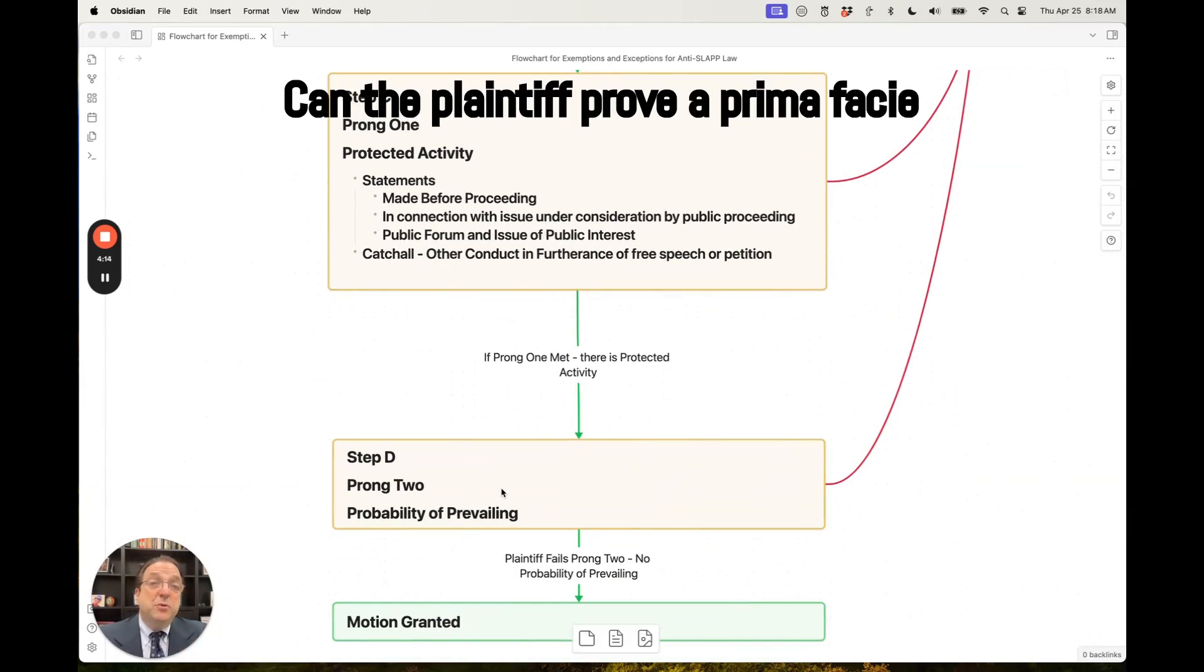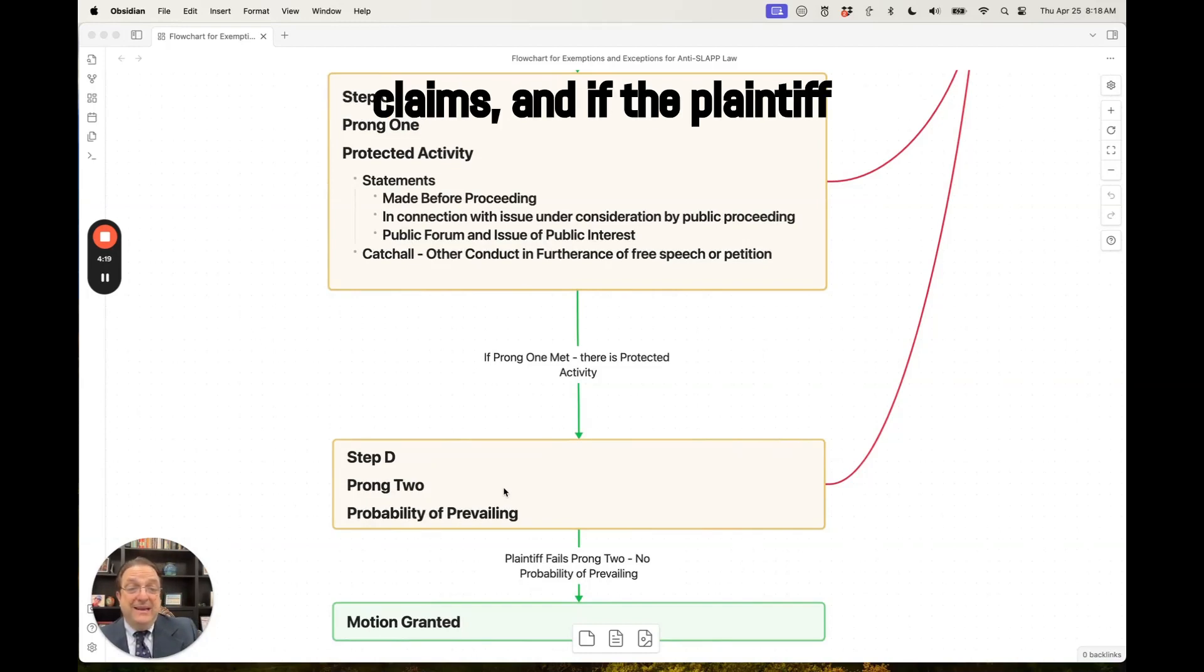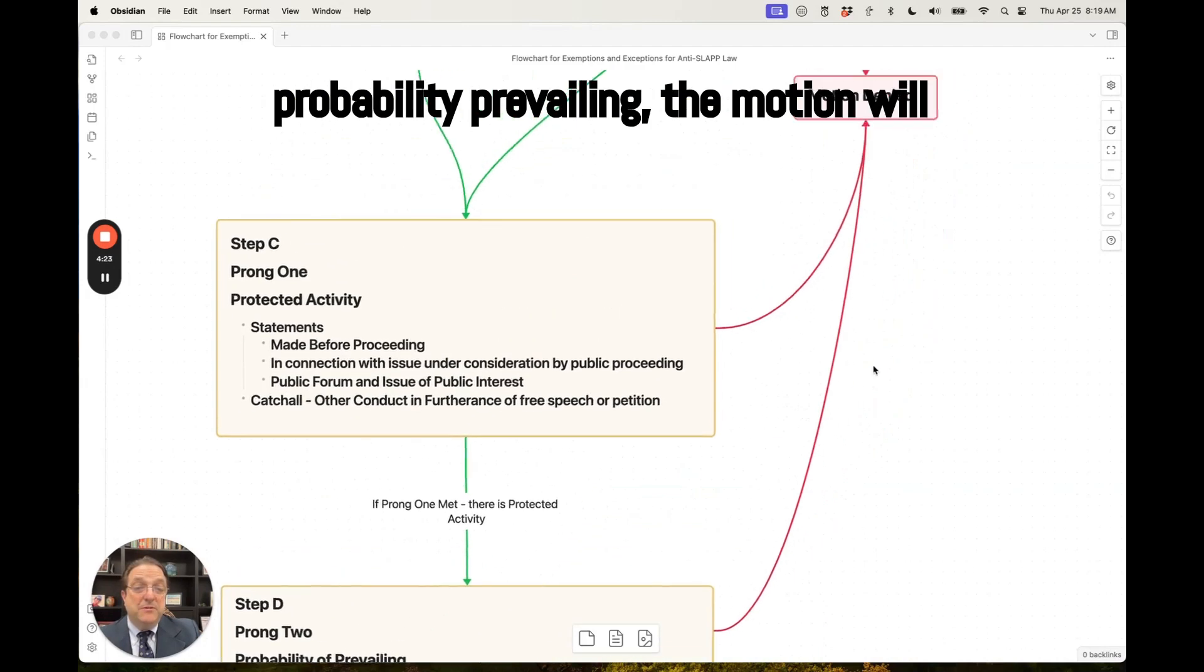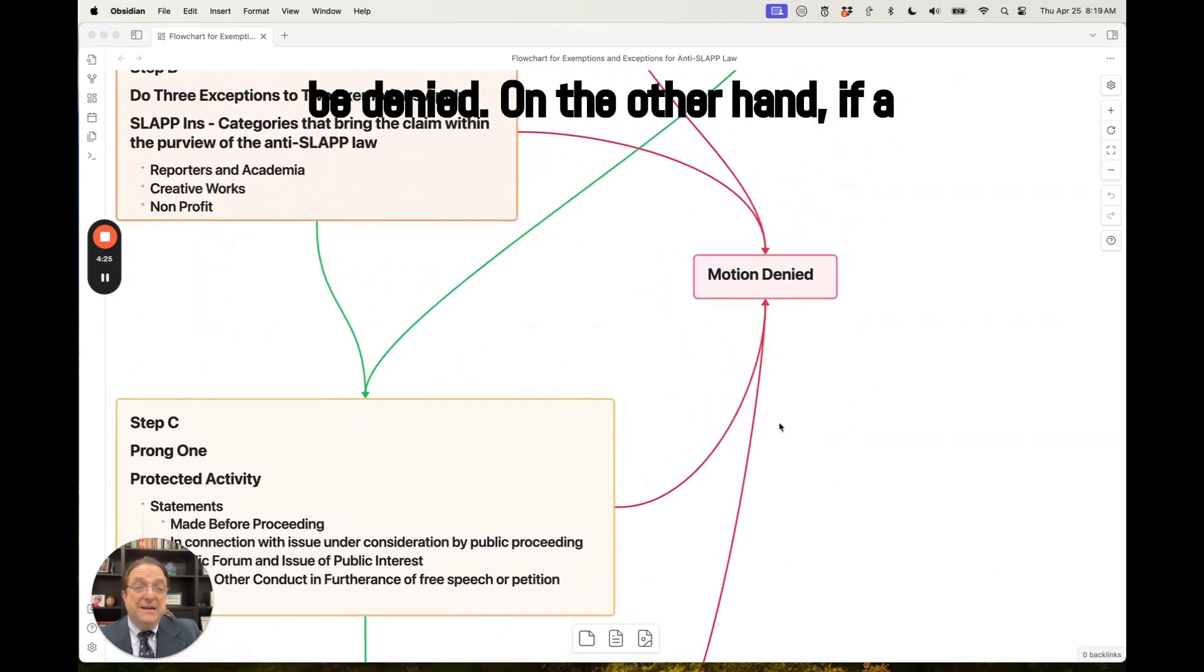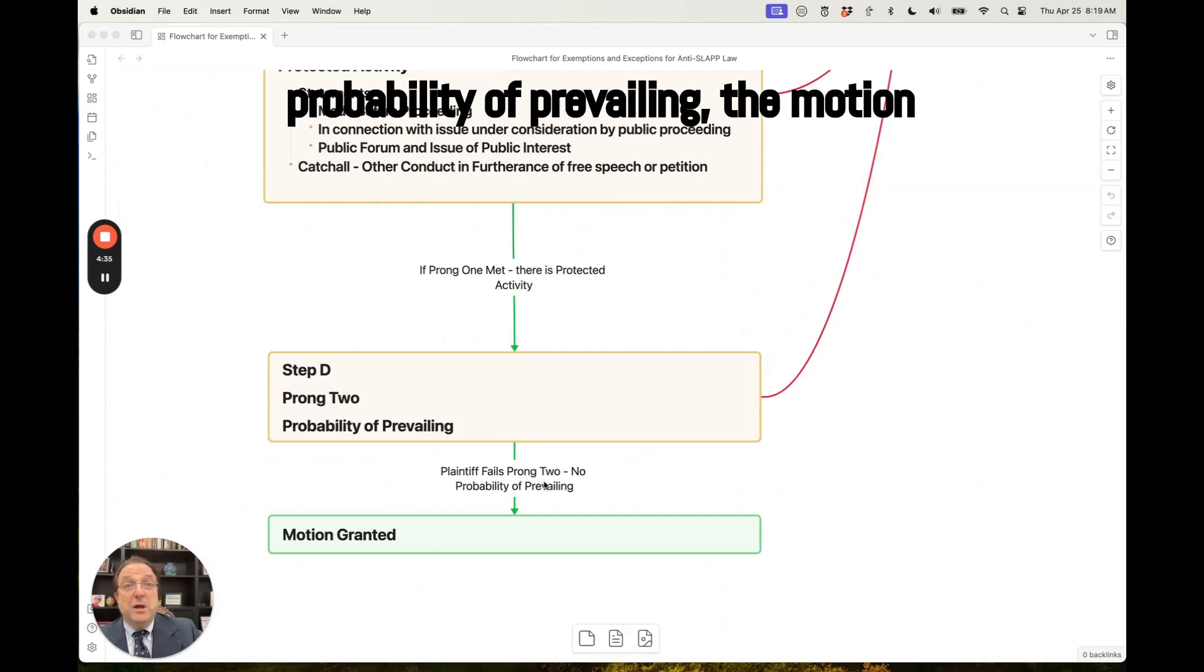Can the plaintiff prove a prima facie case of probability of prevailing on its claims? And if the plaintiff fails this test, cannot prove that probability of prevailing, the motion will be denied. On the other hand, if the plaintiff fails prong two, there is no probability of prevailing, the motion will be granted.